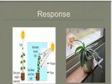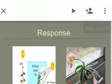Geotropism is unequal growth towards gravity — plants grow in the direction of the force of gravity. The best examples are roots, which show positive geotropism and grow downward towards gravity, and stems, which grow upward away from gravity, showing negative geotropism.